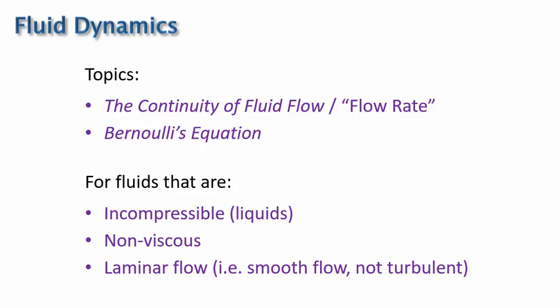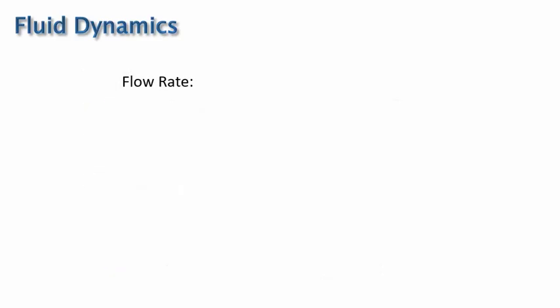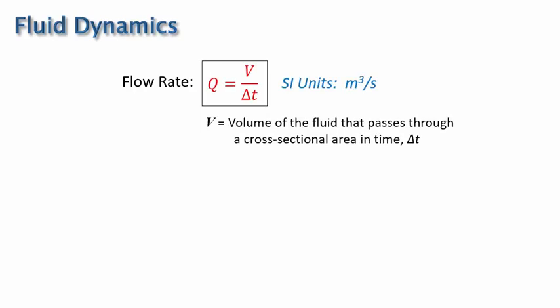We'll start by defining the term flow rate. Flow rate indicates how much fluid flows through a cross-sectional area per time, usually volume per time, such as gallons per minute. We will use Q to represent flow rate, and V is the volume of the fluid that passes through a cross-sectional area in some amount of time. The SI units are cubic meters per second.